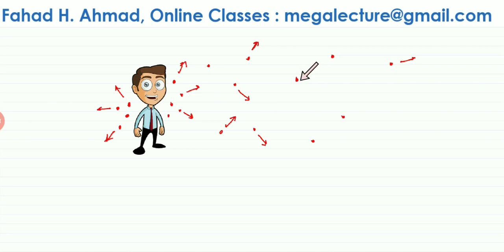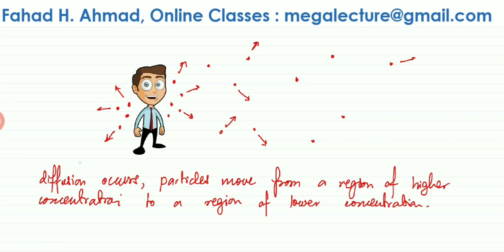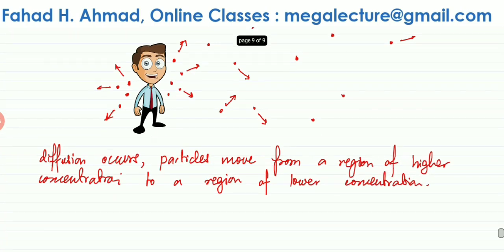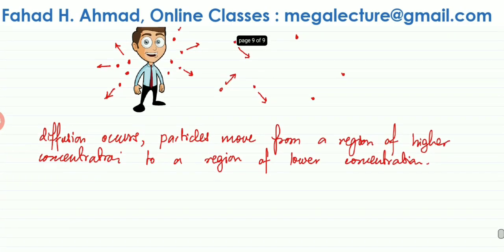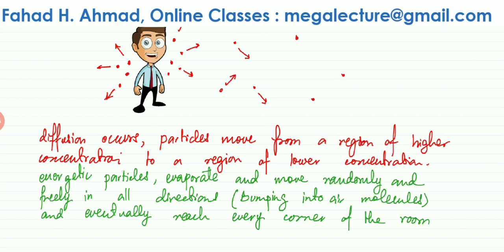This process is known as Brownian motion and also as diffusion. Brownian motion describes how particles constantly collide with air particles, bumping into each other in a zigzag manner rather than moving in straight lines. Diffusion is where particles travel from a region of higher concentration to a region of lower concentration.